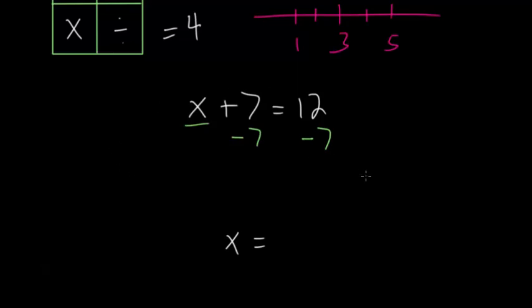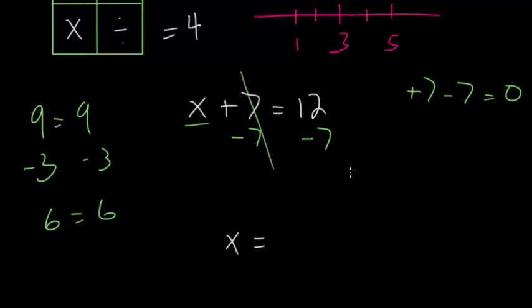Because then we're not effectively changing the equation. If you have something like nine equals nine, and you take away three on each side, it's still a true statement. You still get six equals six. But if you just took away three on one side, you would get six equals nine, which is obviously not true. So the main theme is you've got to do the same thing to both sides. We know plus seven minus seven, that's zero. These cancel each other out. And 12 minus seven is five. That's our answer.